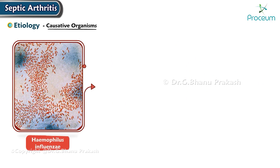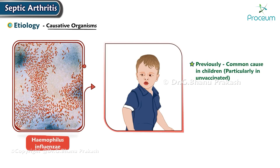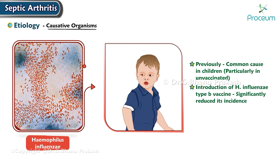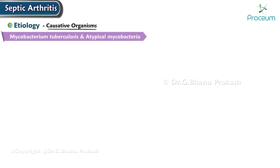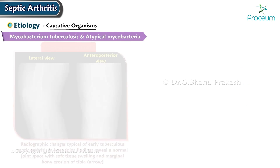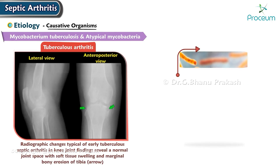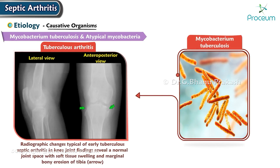Haemophilus influenzae was previously a common cause of septic arthritis in children, particularly in those who were unvaccinated. The introduction of the Haemophilus influenzae type b vaccine has significantly reduced its incidence. Mycobacterium tuberculosis is an important consideration for tuberculous arthritis, especially in endemic areas.